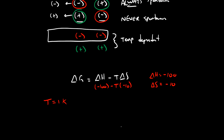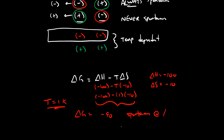At T equals 1 Kelvin, we have negative 100 minus 1 times negative 10, which gives us a delta G value of negative 90. So this is still negative — the reaction is spontaneous at low temperatures.